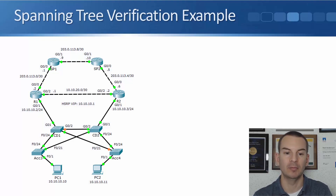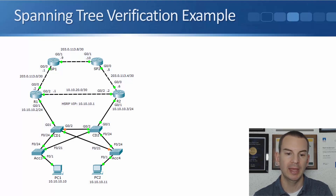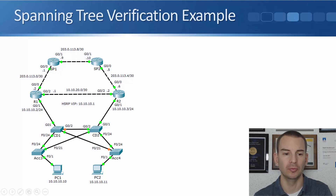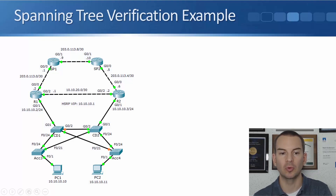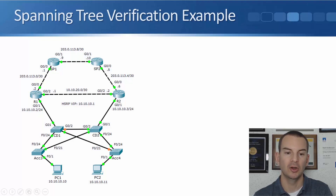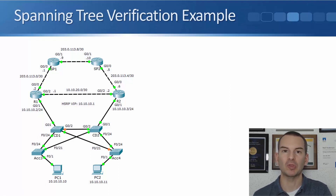I can also see from the diagram that the ports being blocked are Gig 0/2 on CD1 and FastEthernet 0/21 on Access 4. So both possible loops have been broken: the loop from CD1 to CD2 via Access 3 has been broken by blocking Gig 0/2 on CD1, and the potential loop between CD1, CD2, and Access 4 has been broken by blocking FastEthernet 0/21 on Access 4.